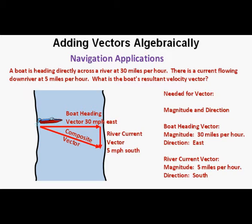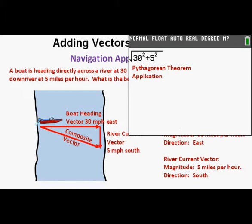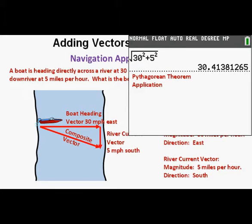Graphically, the composite of the two vectors is the direct line from the tail of the boat heading vector to the tip of the river current vector. Since these two component vectors are at right angles to each other, we can find our resultant velocity vector using the Pythagorean theorem: the square root of quantity 30 squared plus 5 squared. We press enter and get 30.4 miles per hour, rounded to the nearest tenth. That's the magnitude of the resultant vector.